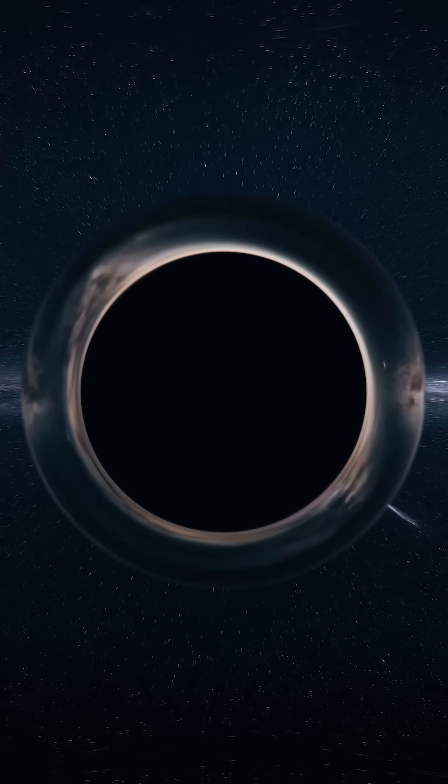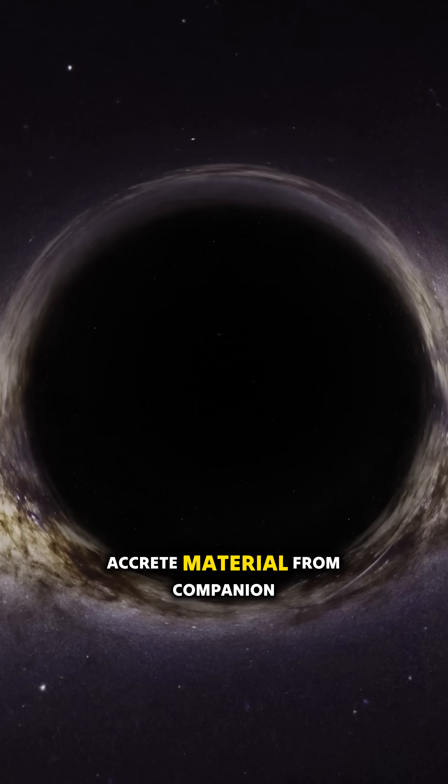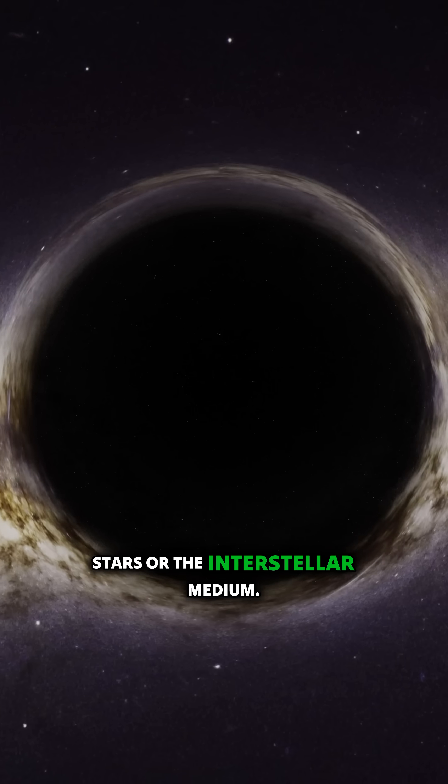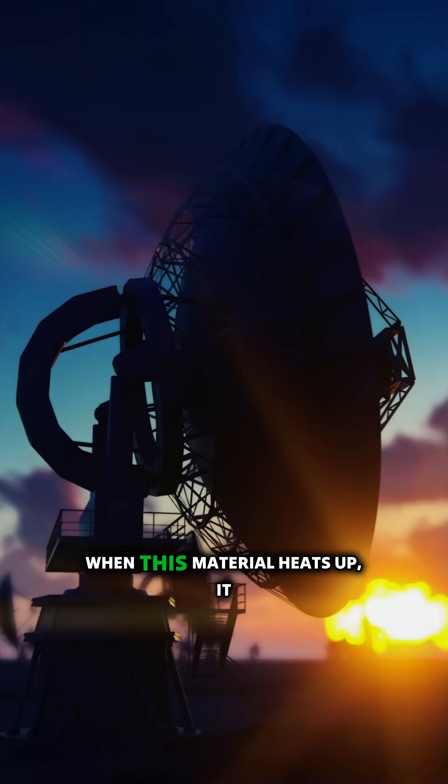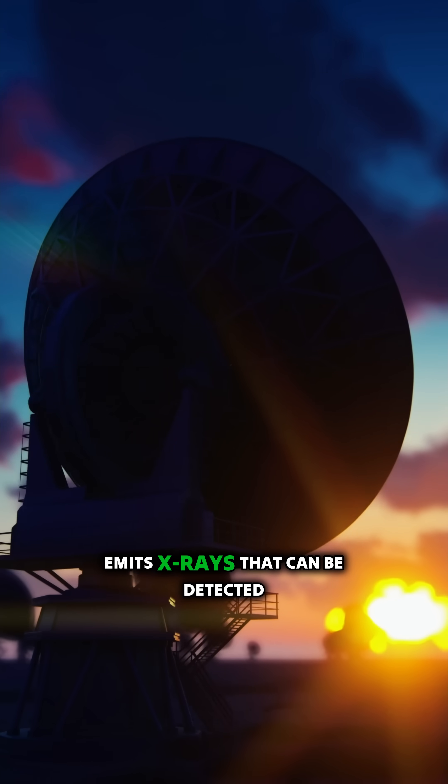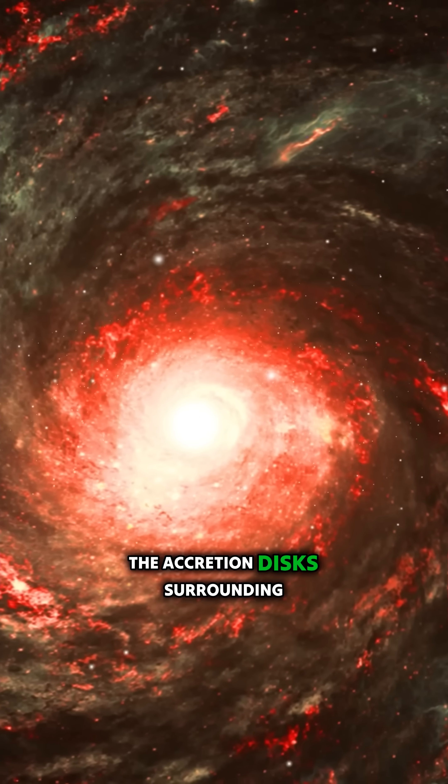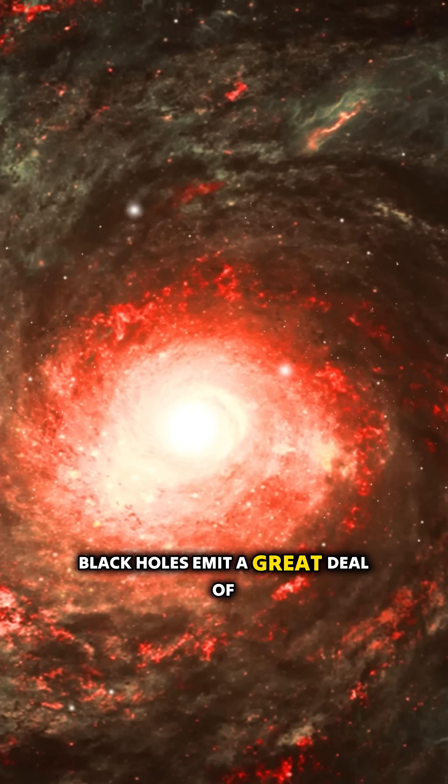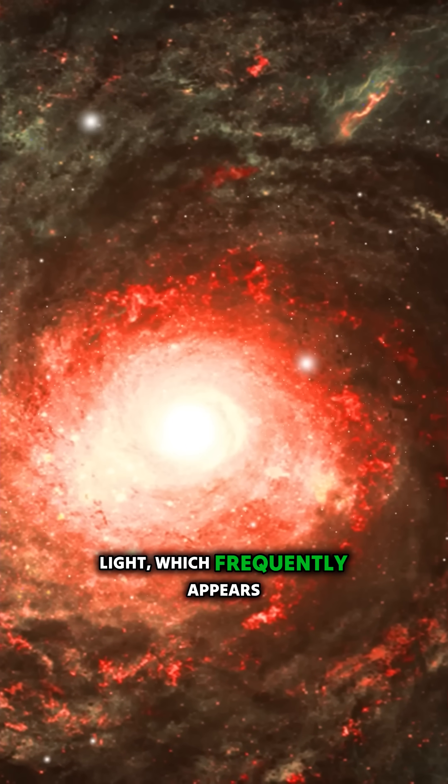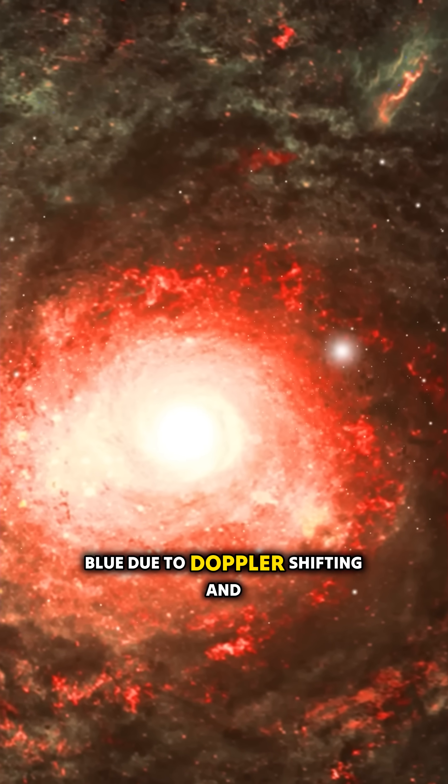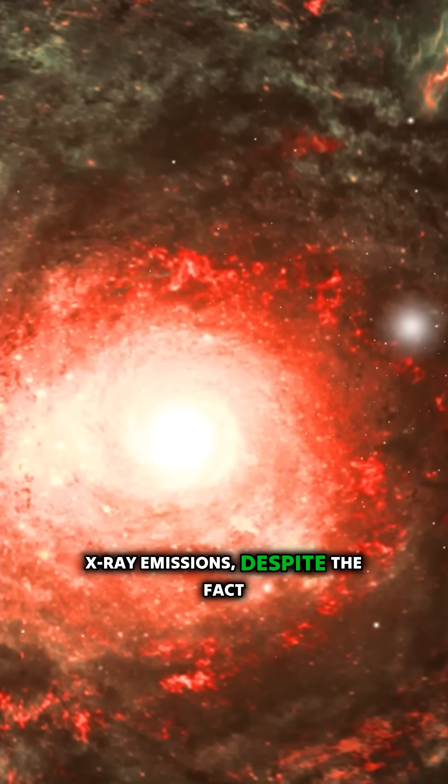An accretion disk, for instance, could be formed if they were to accrete material from companion stars or the interstellar medium. When this material heats up, it emits X-rays that can be detected by instruments. The accretion disks surrounding black holes emit a great deal of light, which frequently appears blue due to Doppler shifting and X-ray emissions, despite the fact that black holes themselves are invisible.